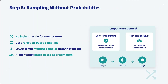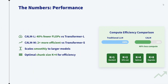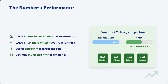Sampling without probabilities: as mentioned, there are no logits because no probability distribution is generated — just vectors. It uses rejection-based sampling. Low temperature accepts only when samples are closely matching; high temperature uses batch-based approximation.